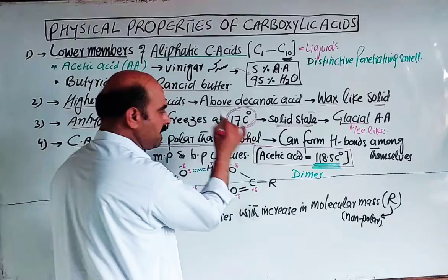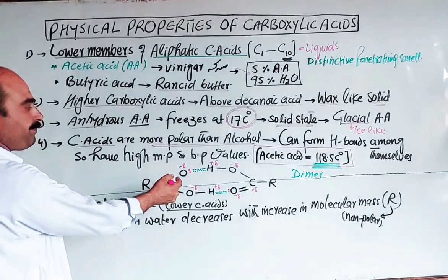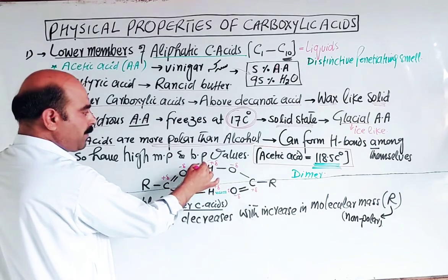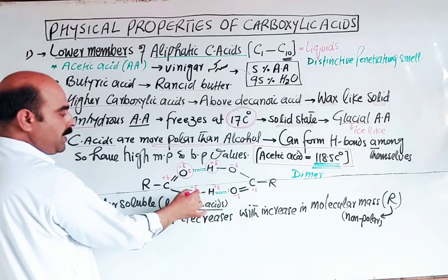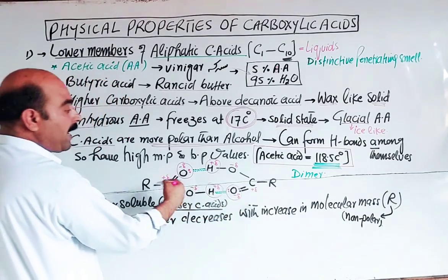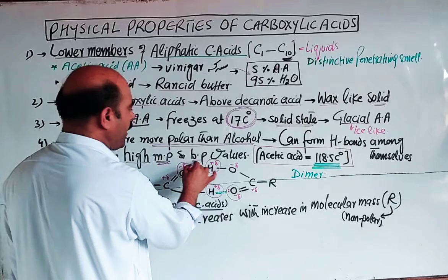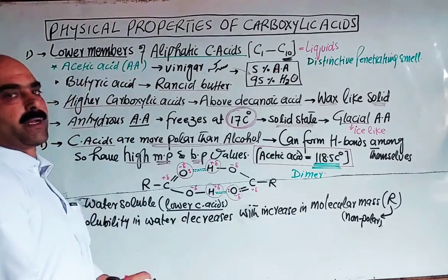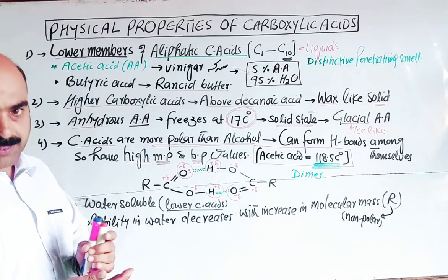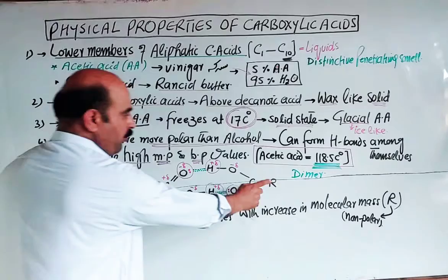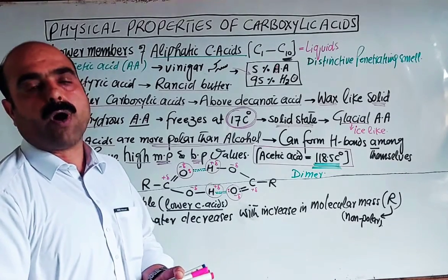Carboxylic acids are more polar than alcohols. They can form hydrogen bonds among themselves — between the partial positive hydrogen atom and the lone pair of electrons of the carbonyl oxygen — which increases their melting point and boiling point. Acetic acid has a boiling point of 118.5 degrees. Lower carboxylic acids are water soluble, but as the carbon chain increases and molecular mass increases, solubility in water decreases.